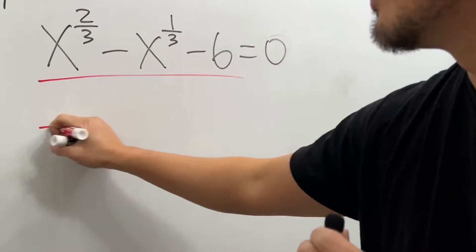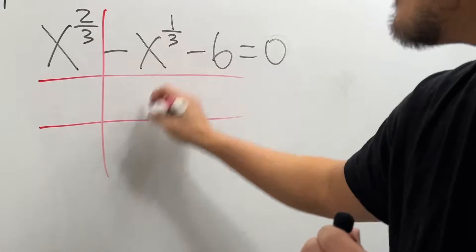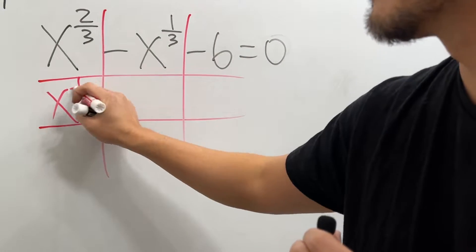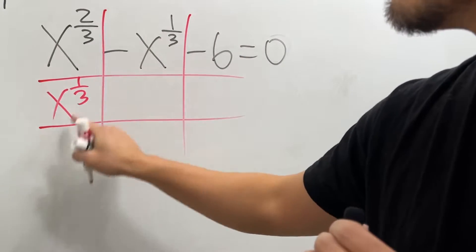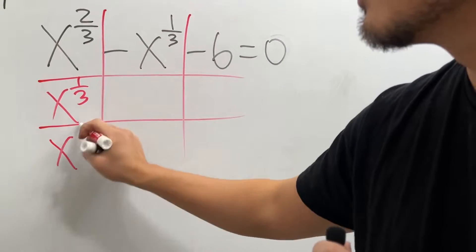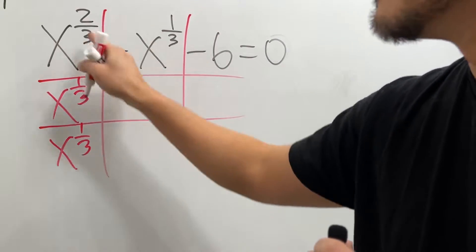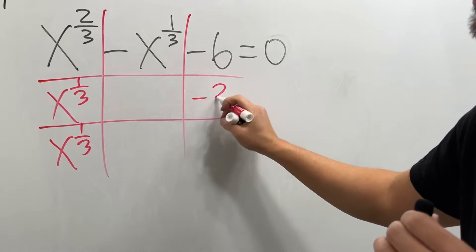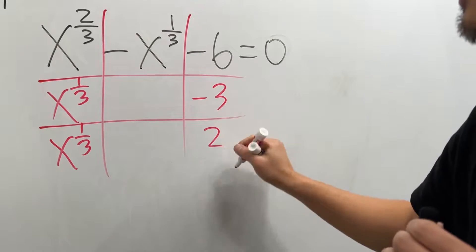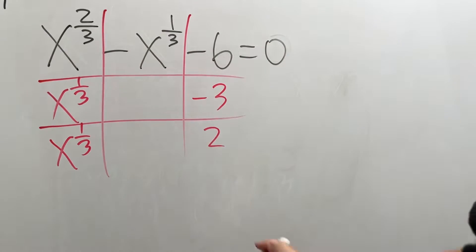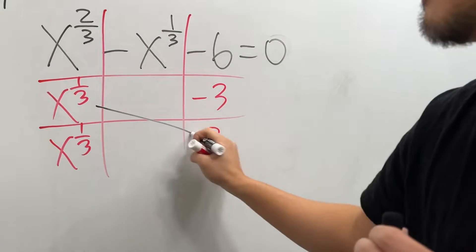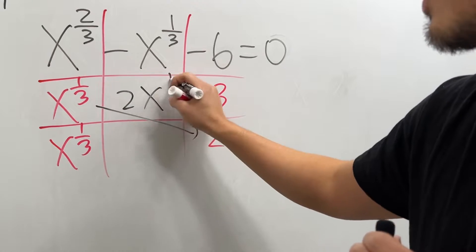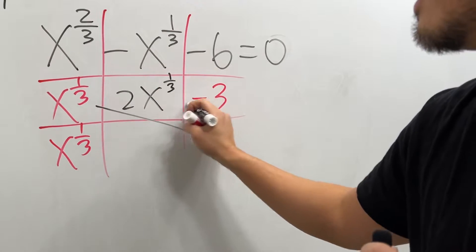So, check this out. We are going to do this by factoring, because this part is factorable. x to the one-third times x to the one-third does give us that, and then this right here, I will use negative 3 times positive 2 because that will give us that, and then this times this will give me positive 2x to the one-third power.